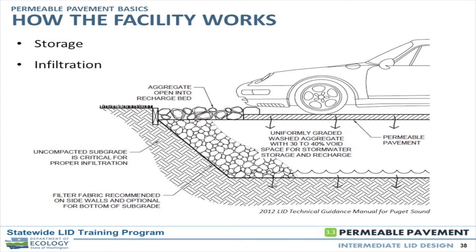There may be a geosynthetic — either a geogrid or geotextile — and that is often overused. Generally, you do not need geotextile on the bottom of these systems to separate the aggregate base from your subgrade. You may need it for structural stability, and it may often be used on the sides of the facility to prevent movement of material into that aggregate base. Material moving from the subgrade up into your aggregate base is generally not a concern.